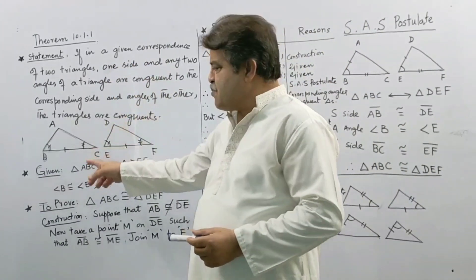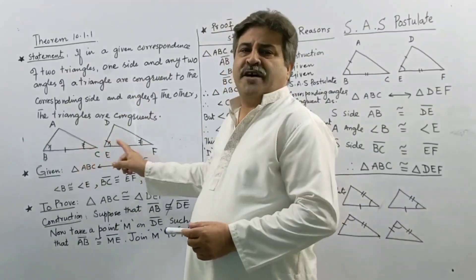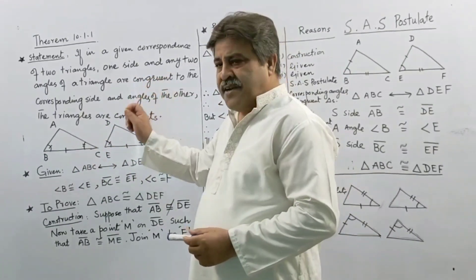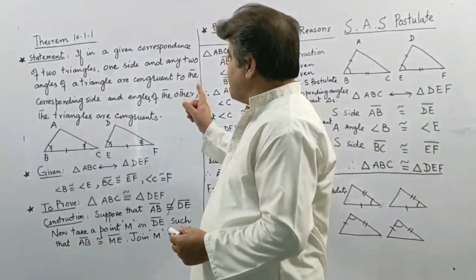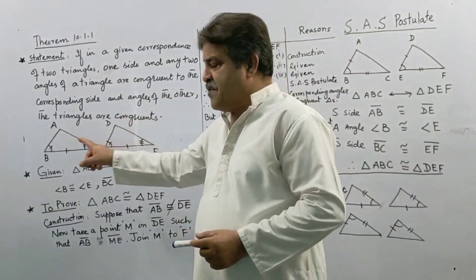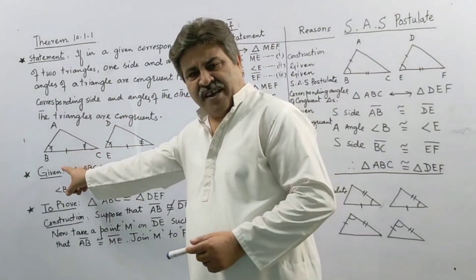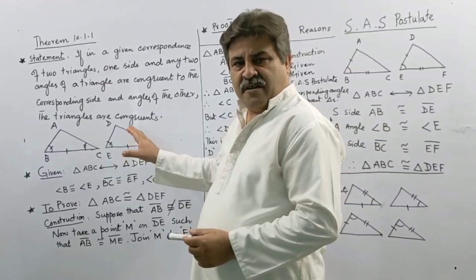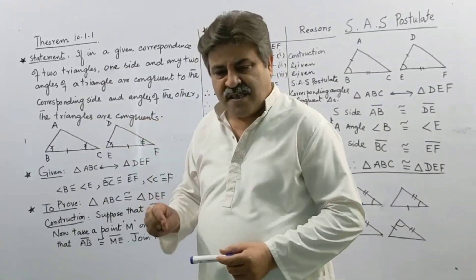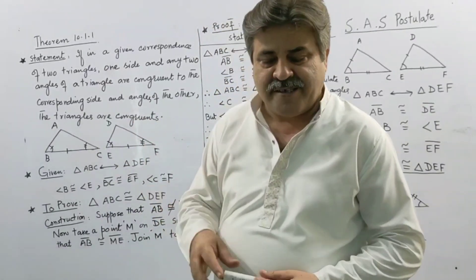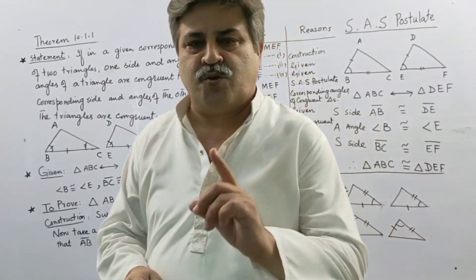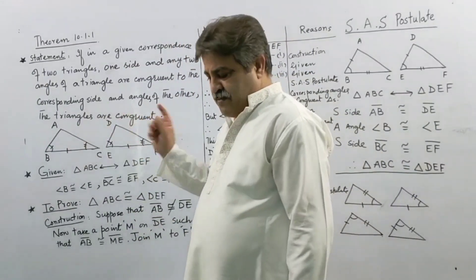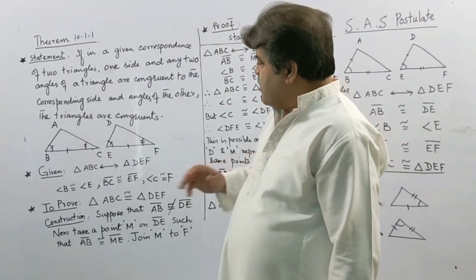If in a given correspondence of two triangles, one side and any two angles of the first triangle are correspondingly congruent to the one side, corresponding side, and the other two angles of the other, the triangle must be congruent.